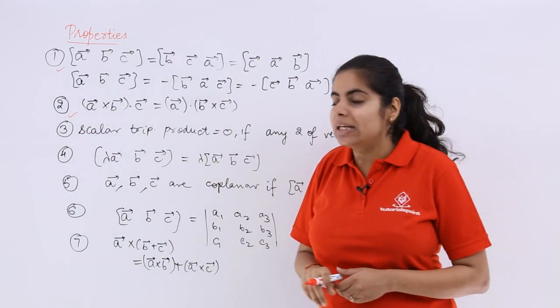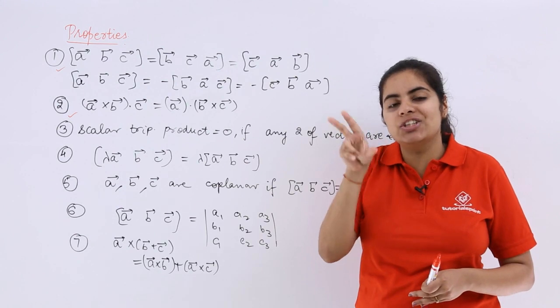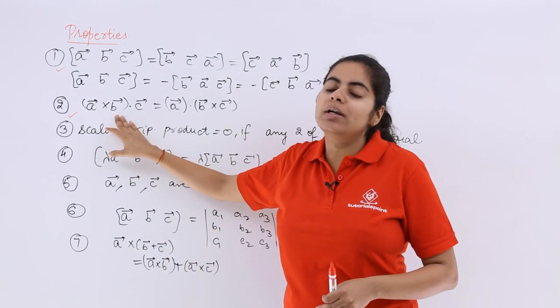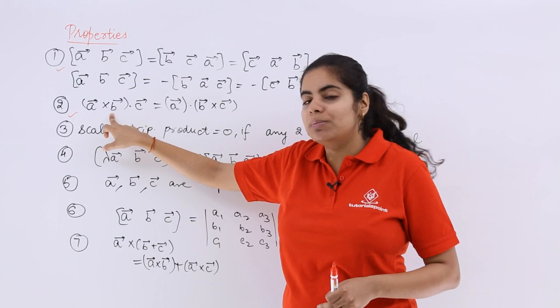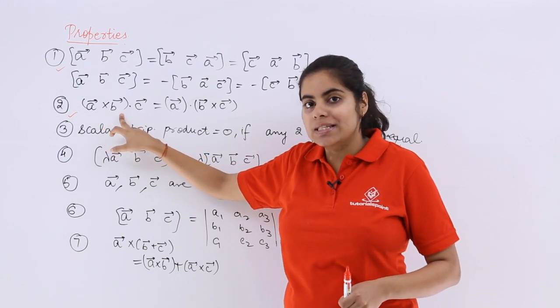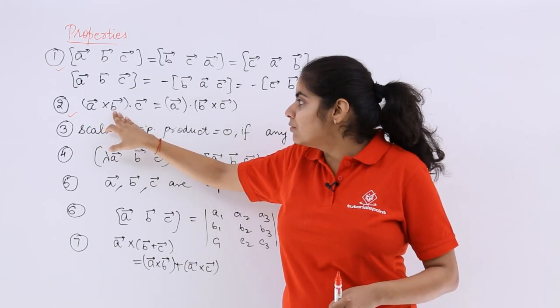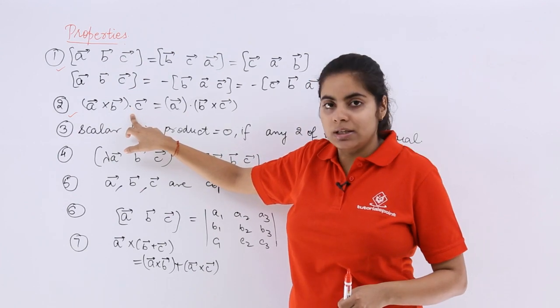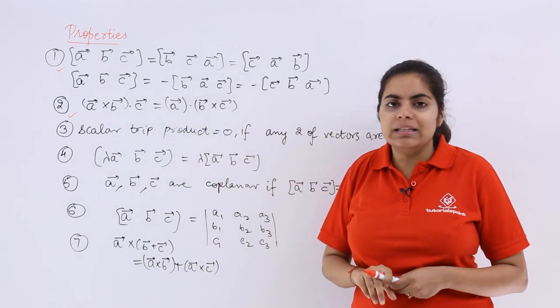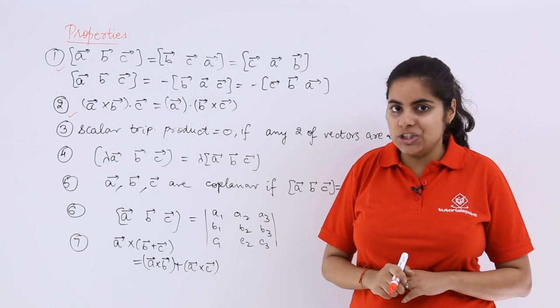Talking about the second property, you can change the dot and the cross. So scalar triple product ABC's actual definition means A cross B dot C, but you can always replace it by keeping the dot and cross interchanged. The magnitude or the answer does not change.